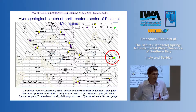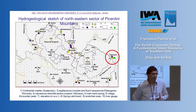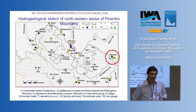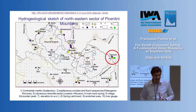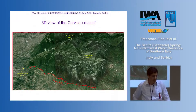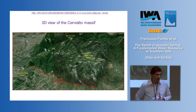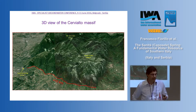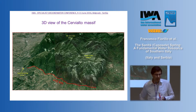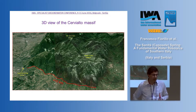On the west side, another wide karst massif — the Terminio karst massif — feeds other basal karst springs. Some of them, including the Cassano spring, also supply the Pugliese Aqueduct. This is a 3D view of the Cervialto massif, where we can see this area is characterized by high steep slopes, and a large fault joins the flysch sequences with the karst terrain.